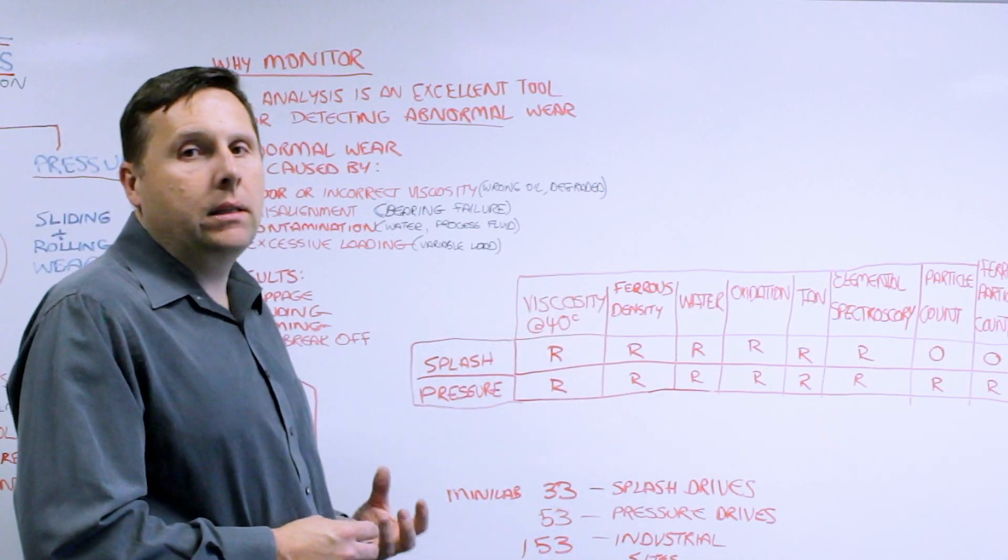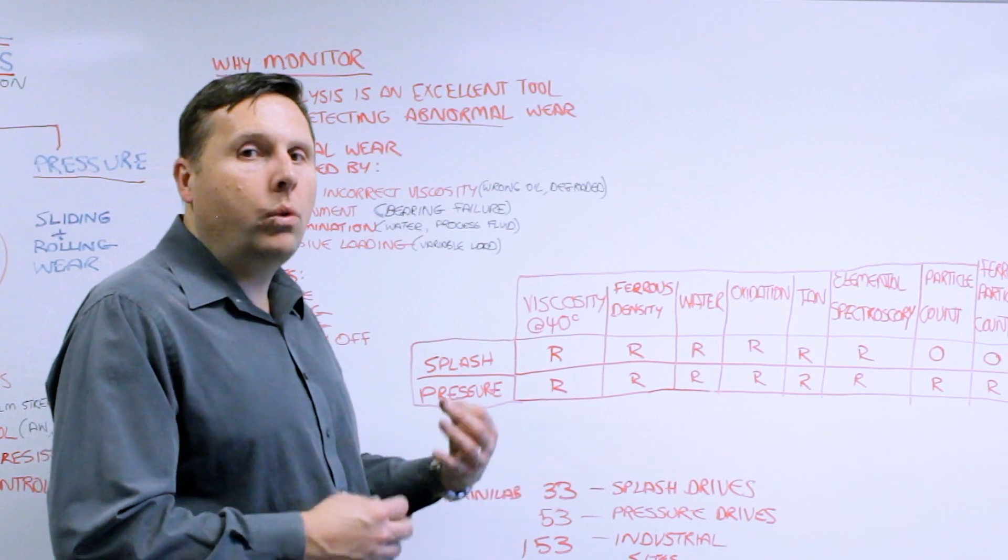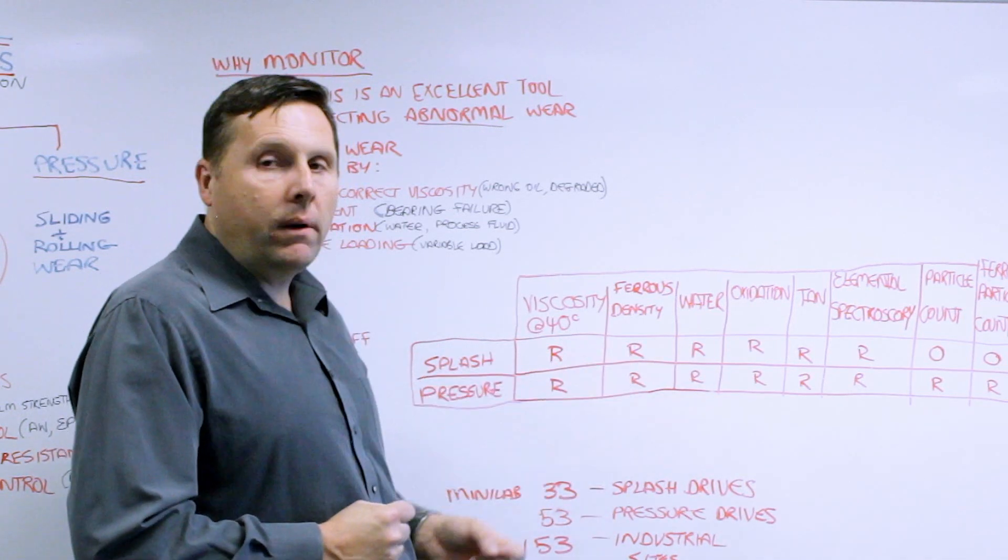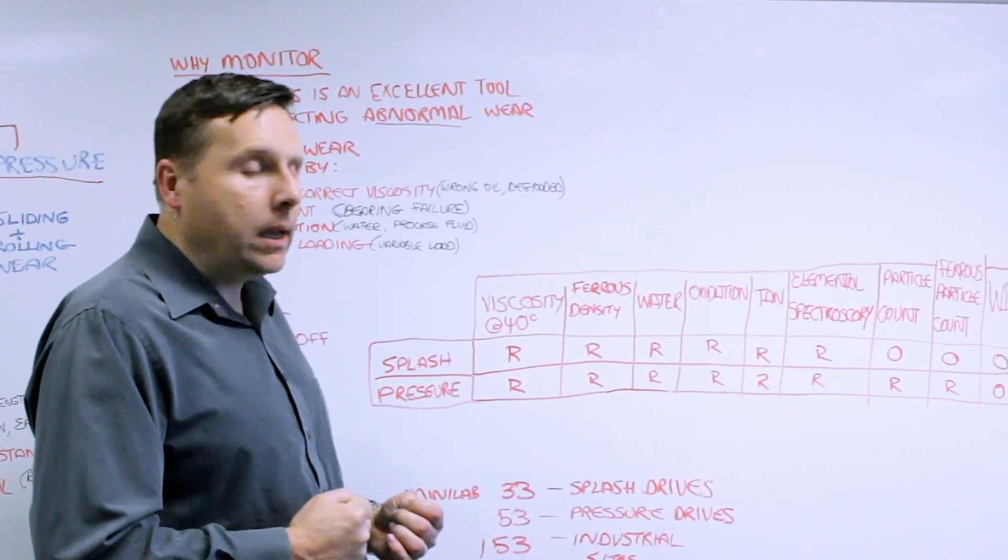Ferrous density is an excellent screening tool for the large abnormal ferrous wear that can occur when you have abnormal wear being produced. You want to check for water contamination. It's the most common liquid contaminant getting into the system.